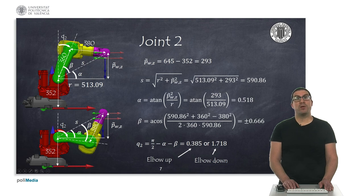In particular we need to compute the height and separation of the right angle formed by the pwz tilde variable, which is actually the height of the wrist point minus the height of the first link.